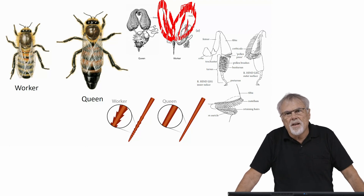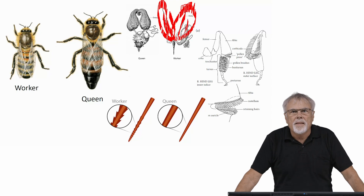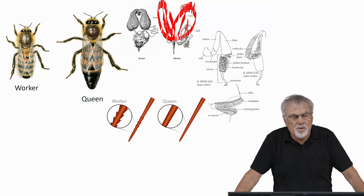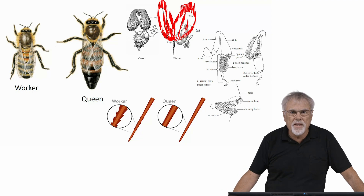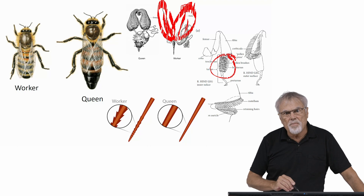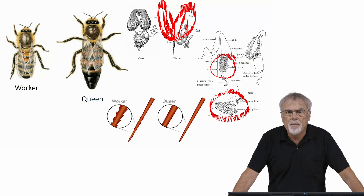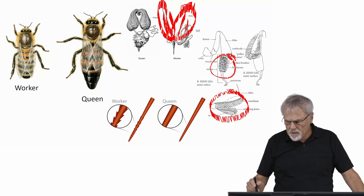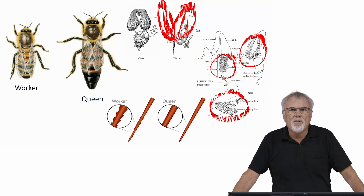To the right, you can see the hind legs of a worker, which are very different from the hind legs of a queen. The hind legs of the worker contain adaptations — fundamentally varying parts that allow them to collect and pack pollen. There is a pollen brush where they can brush pollen off parts of their body, a pollen press that they use to press the pollen into the corbicula, which is the pollen basket they then carry on their hind legs.